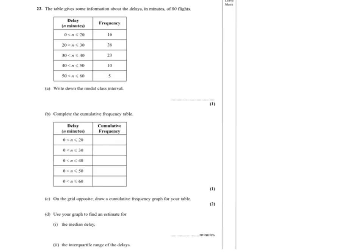So the first part of our question, we've been given some information on the table about the delays in minutes of 80 flights. We've got to find the modal class interval.